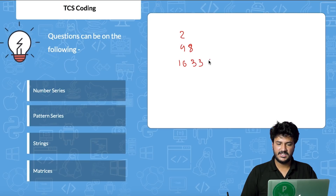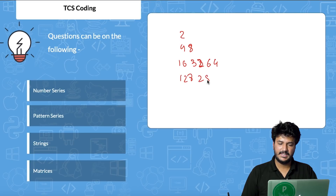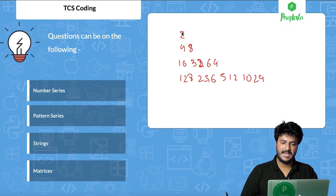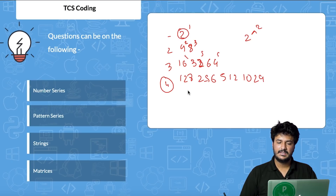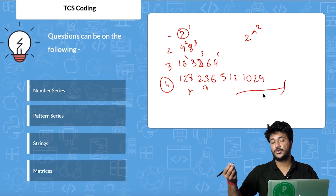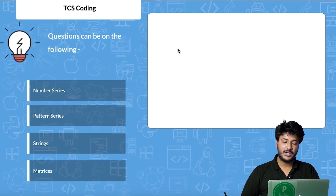Continuing the pattern: 128, 256, 512, 1024. What is happening is every line there is one number, then two, then three, then four, and it's iterating on powers of 2 — 2 to the power of 1, 2 to the power of 2, then 3, 4, 5, 6, 7, 8, 9, and so on.